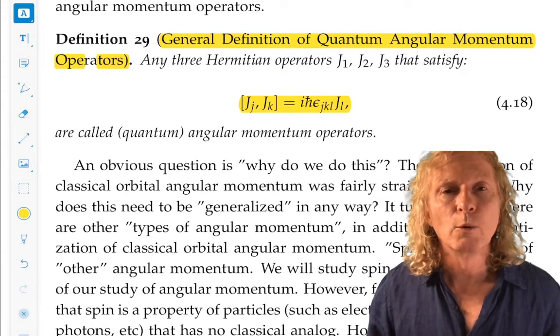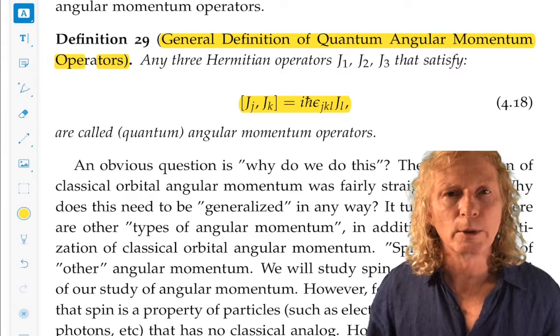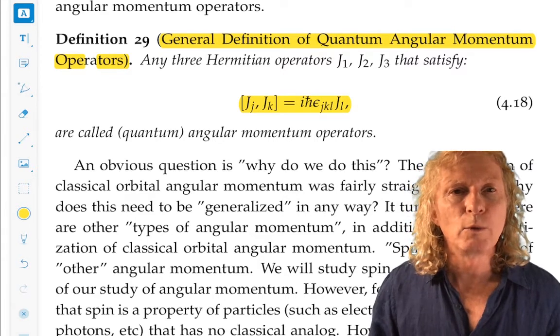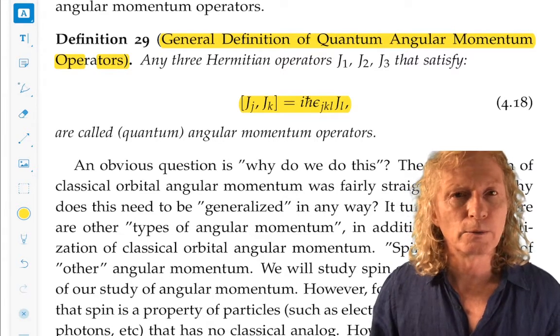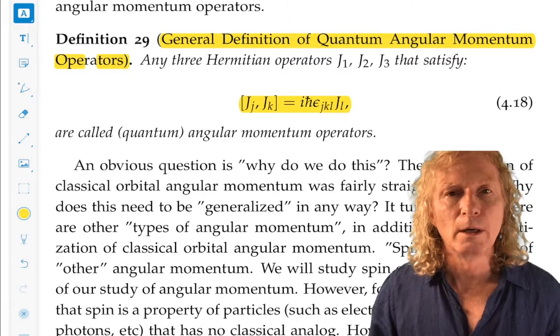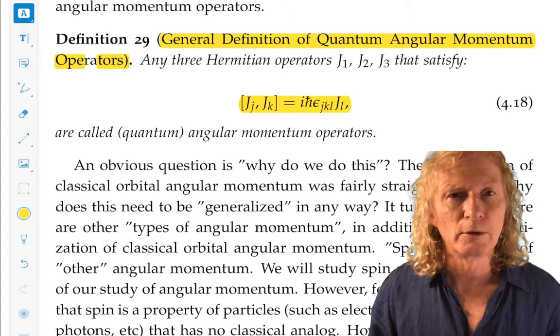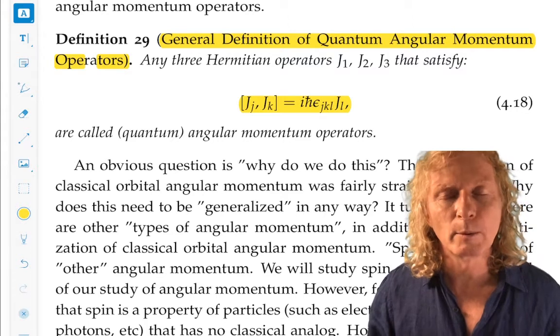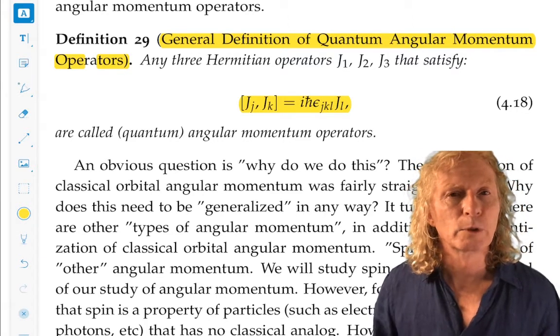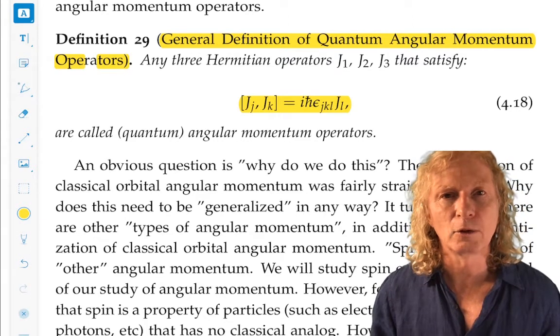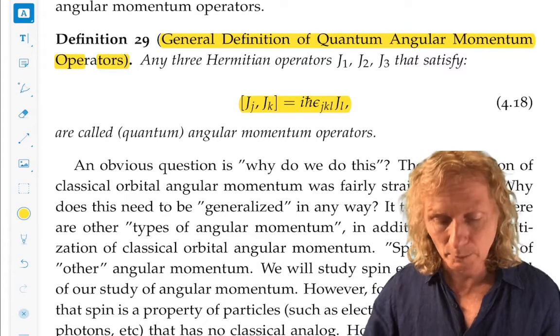So we're going to develop a general theory all in one and we will adapt it to the particular physical situation for which we're interested in describing, such as quantum orbital angular momentum or spin, which doesn't have a classical analog. And we'll see that as we get to the end of this chapter.